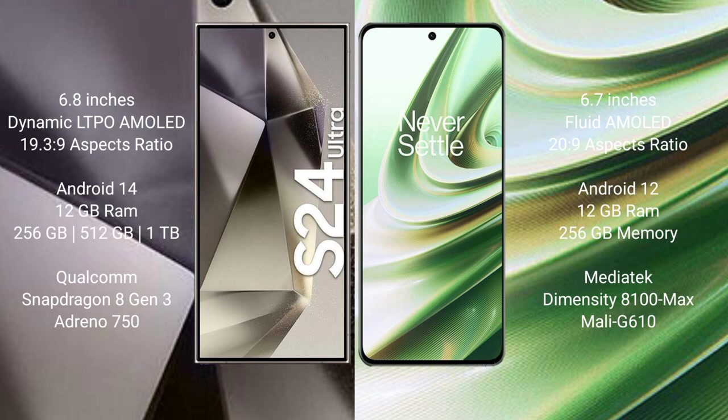OnePlus 10R comes with a 6.7-inch flat AMOLED display and sensor pressure 120Hz. Samsung Galaxy S24 Ultra runs on Android 14 operating system. OnePlus 10R runs on the Android 12 operating system.